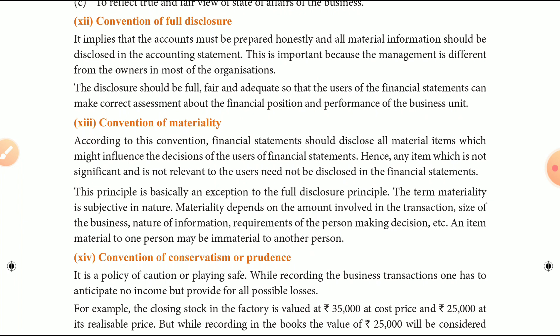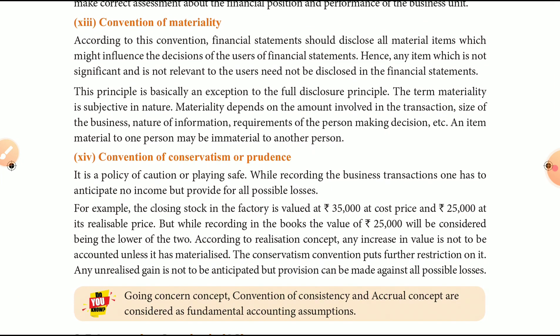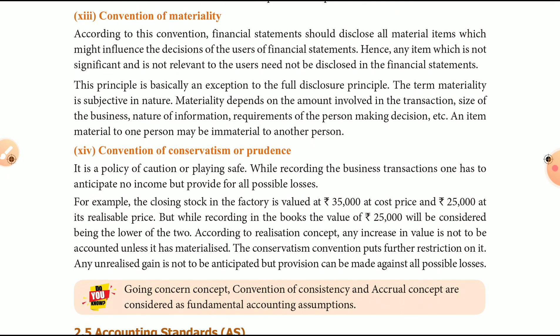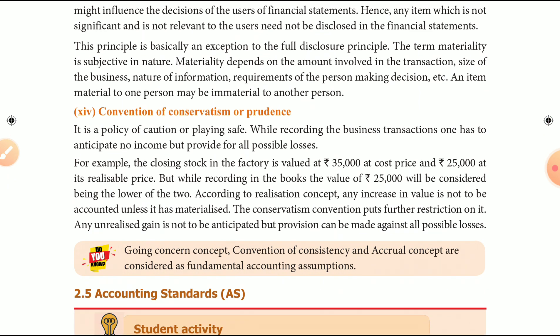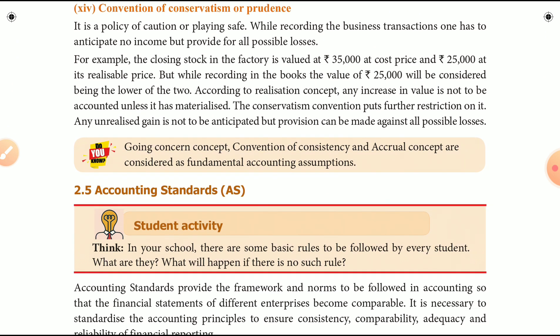The next concept is the Convention of Materiality. We are talking about the main part of the financial position. When you are talking about the business, you are talking about the main part of the employee and the top section of the financial position, including any benefits of the employee.